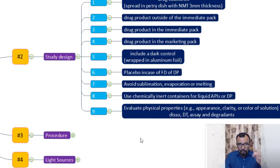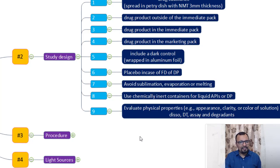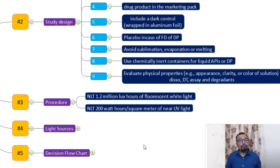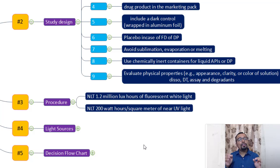So this is the study design. The procedure — point number three — requires exposing your sample for not less than 1.2 million lux hours of fluorescent white light or sunlight, and not less than 200 watt hours per square meter of near UV light. This is the requirement given in the guideline ICH Q1B: photostability of drug substance and drug product.